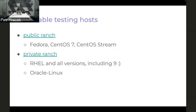Testing Farm supports two ranges. The public range includes Fedora, CentOS 7, CentOS Stream 8 and 9 — you can test your project against these using our GitHub Action. The private range allows testing on RHEL, all versions from 7 through 9, and even Oracle Linux.